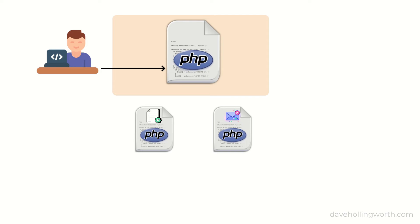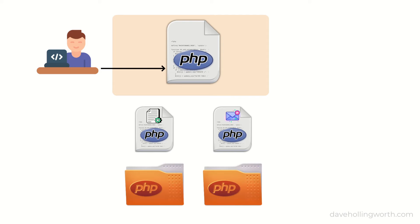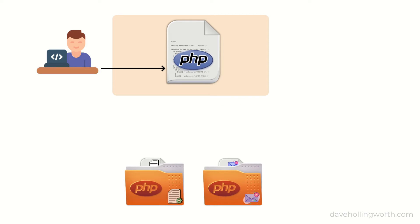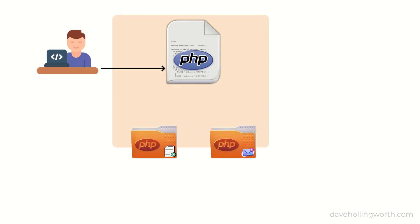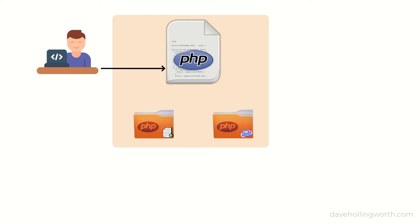A package or library is just a folder that contains files. These folders typically contain PHP code, but can also include other types of files if the package needs it. So to use this code, all you need to do is copy the package folder into your codebase and include the files from your own scripts.